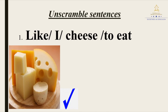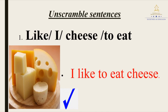Here we have unscramble sentences. We are going to organize each sentence in the correct way. As you can see, we have some words in a disorganized way, but we need to organize the words in order to create the correct sentence. For example, in number one, we have: like, I, cheese, and to eat. So if we organize the words, we create this sentence: I like to eat cheese. Repeat after me: I like to eat cheese.